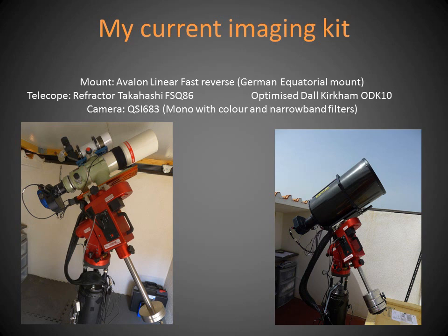This is my current imaging kit. I use two telescopes: on the left is my refractor, a wide-field telescope giving a focal length of around 330mm, and on the right is an optimised Dall-Kirkham telescope giving a focal length of 1700mm — 1.7 metres. A lot of deep sky targets are very large and a lot are very small, so having two scopes lets me focus on both. Unfortunately there isn't really a one-scope-does-it-all solution. The camera on the back is a QSI camera, which looks nothing like a DSLR.